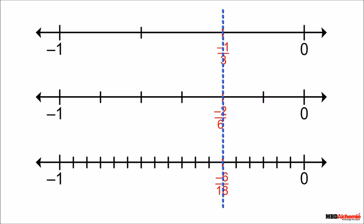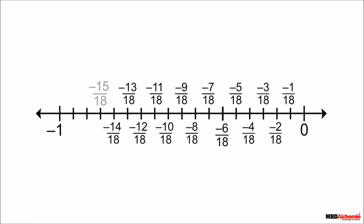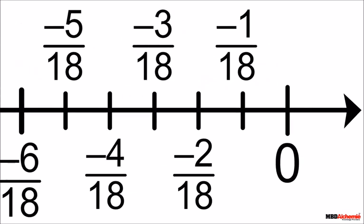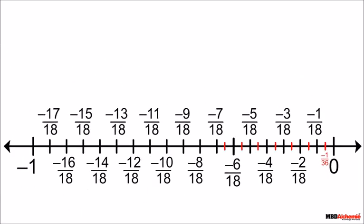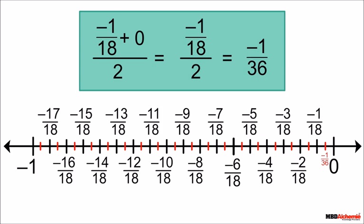In the last number line, each of the small divisions represents a rational number, and all of these lie between 0 and minus 1. If we divide the length between minus 1 upon 18 and 0 into two equal parts, this means we are doubling the number of parts, and this mark represents minus 1 upon 36. Thus a rational number between two rational numbers can be found by finding the arithmetic mean of the given two rational numbers. By repeating this method, we can find any number of rational numbers between two given rational numbers.